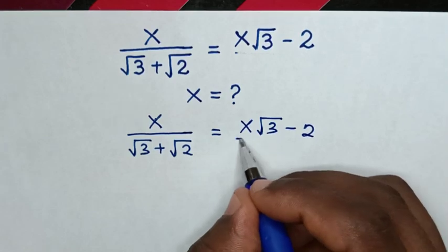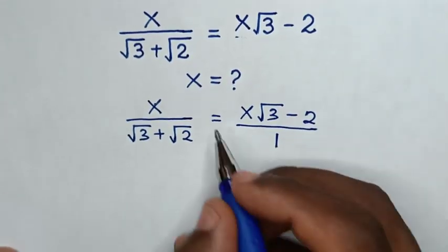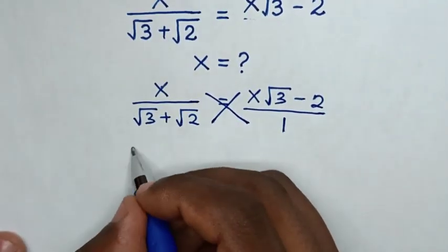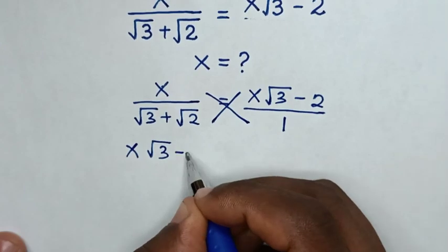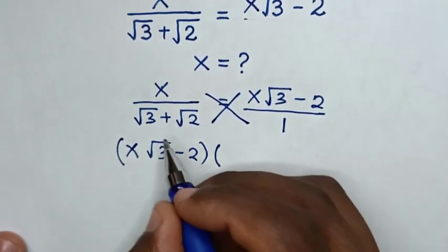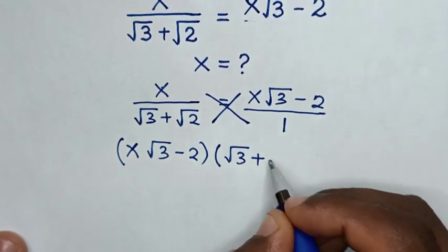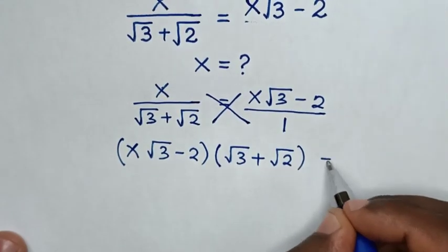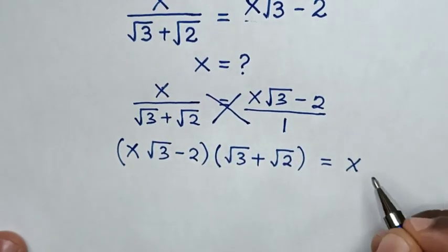This is the same as over 1. Then in the next step we'll cross multiply. So it will be x square root of 3 minus 2, in brackets, times square root of 3 plus square root of 2, in brackets. So this is equal to x.